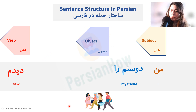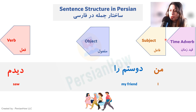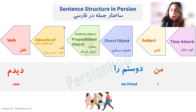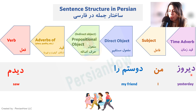Now let's expand the sentence a little bit and add more elements. For example, we can add a time adverb; the object can be divided into direct object and prepositional object, and we can also add an adverb of place. For example, 'man doostam ra didam' — since the verb is in past tense, we can add a time adverb like 'diruz' (yesterday): 'diruz man doostam ra didam.'